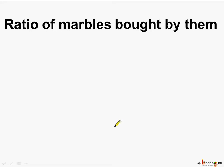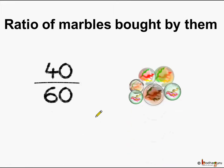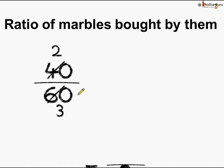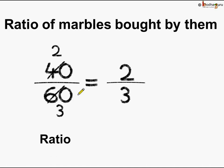The ratio of marbles bought by them can be represented by the fraction 40 by 60. Let us reduce this fraction to its lowest term. We will divide by 20. So 20 twos are 40 and 20 threes are 60, so this fraction is reduced to 2 by 3. The ratio becomes 2 is to 3.